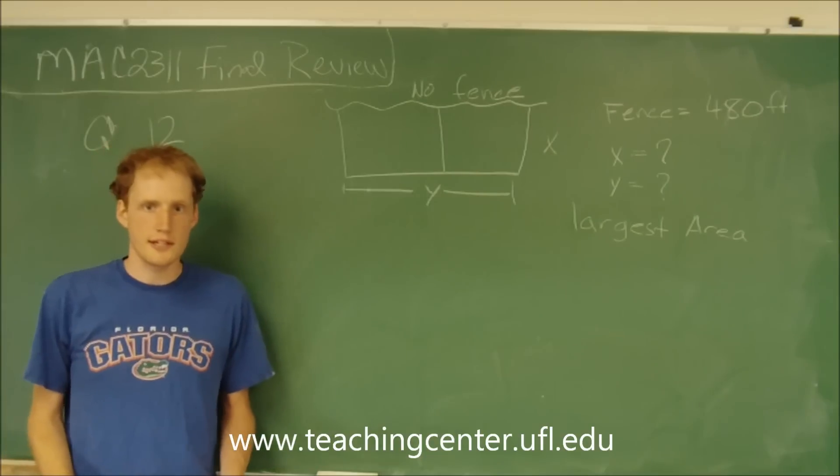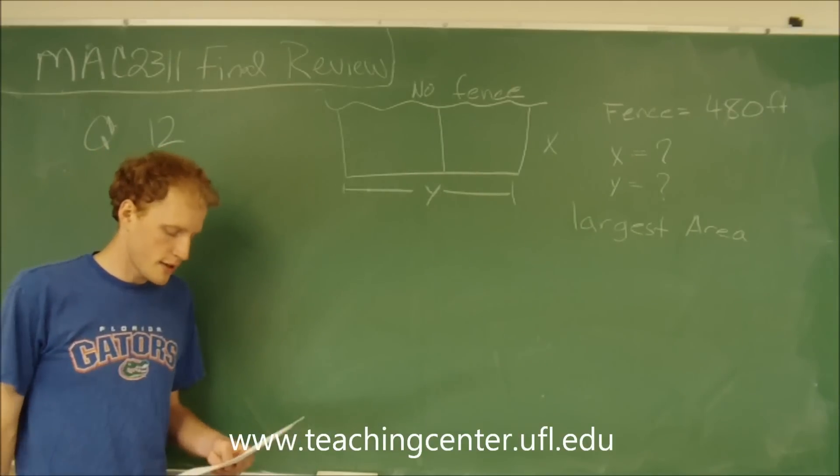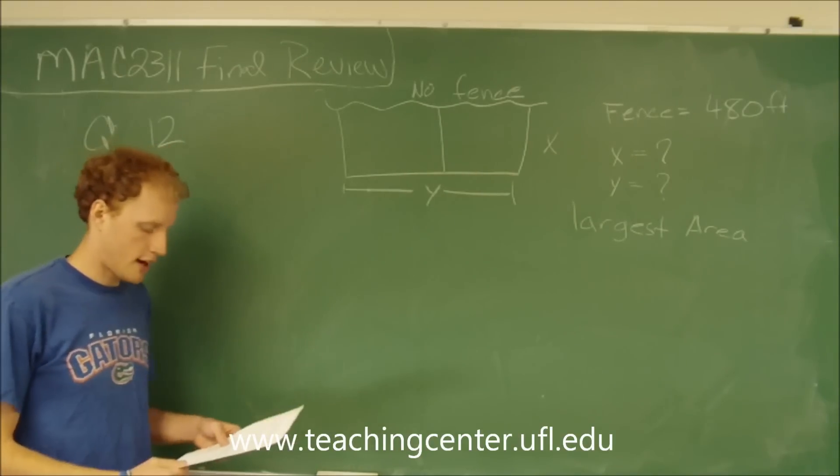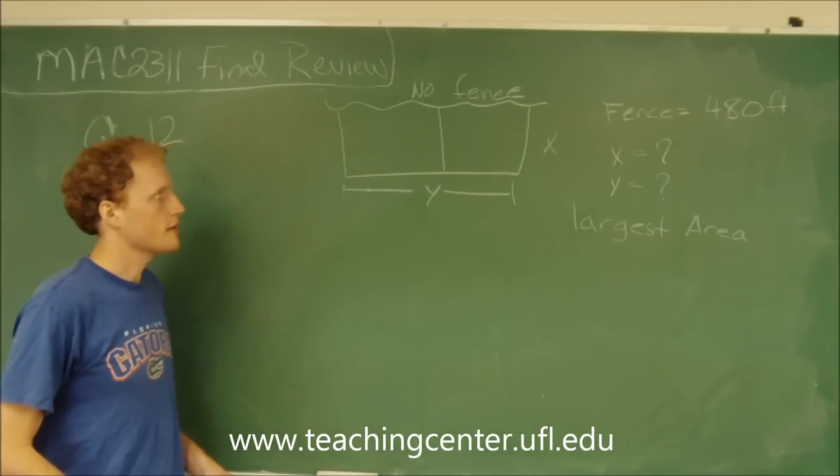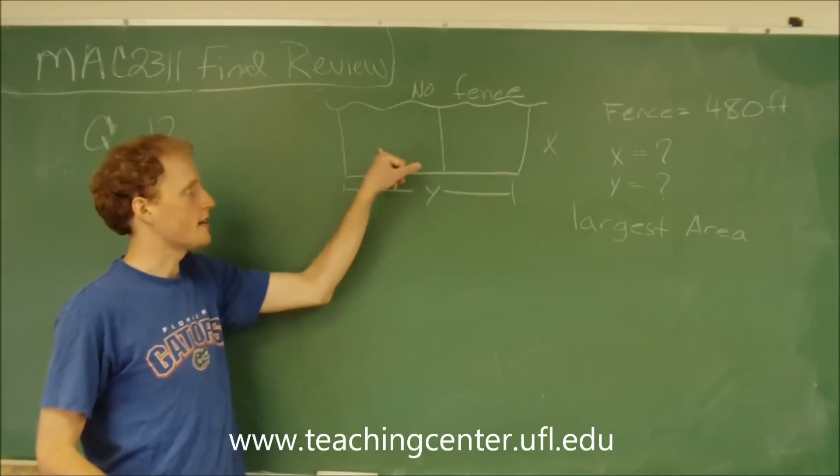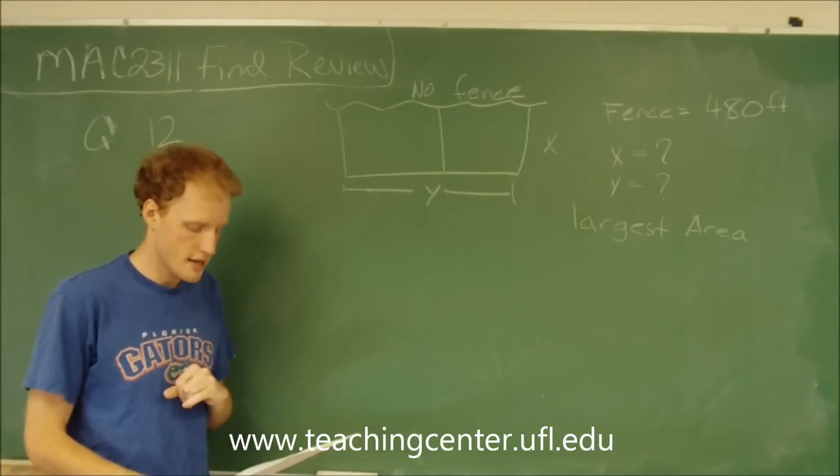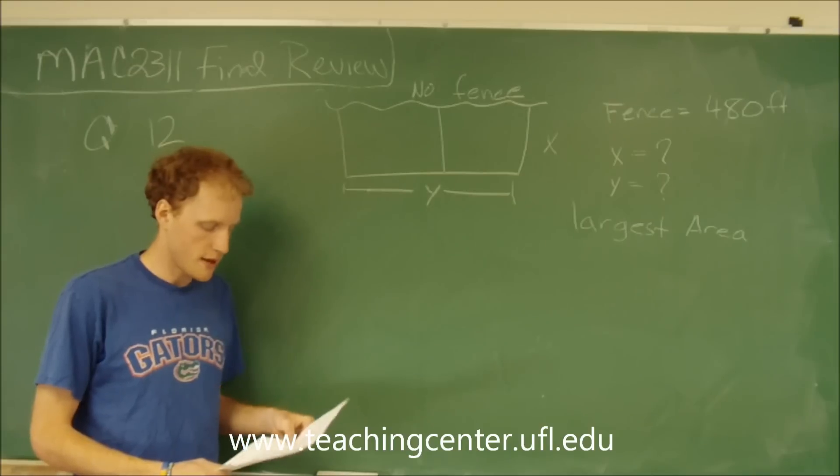This is problem number 12. It says a rancher wants to enclose two rectangular areas bordering a river. So here's the river and here's two rectangular areas, one for sheep and one for cattle.